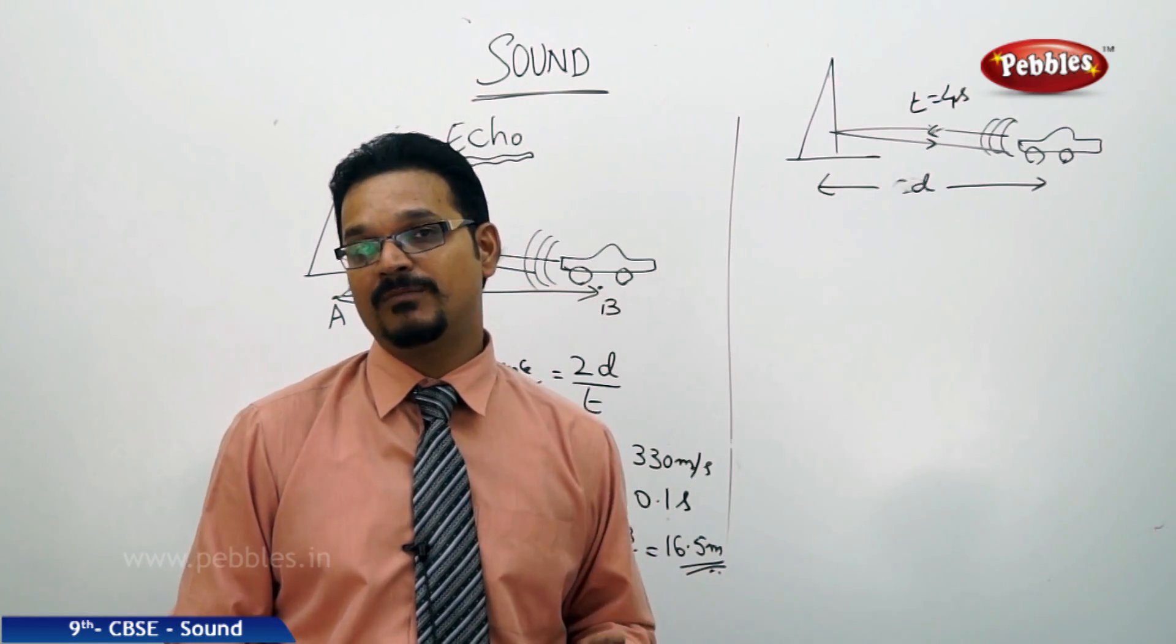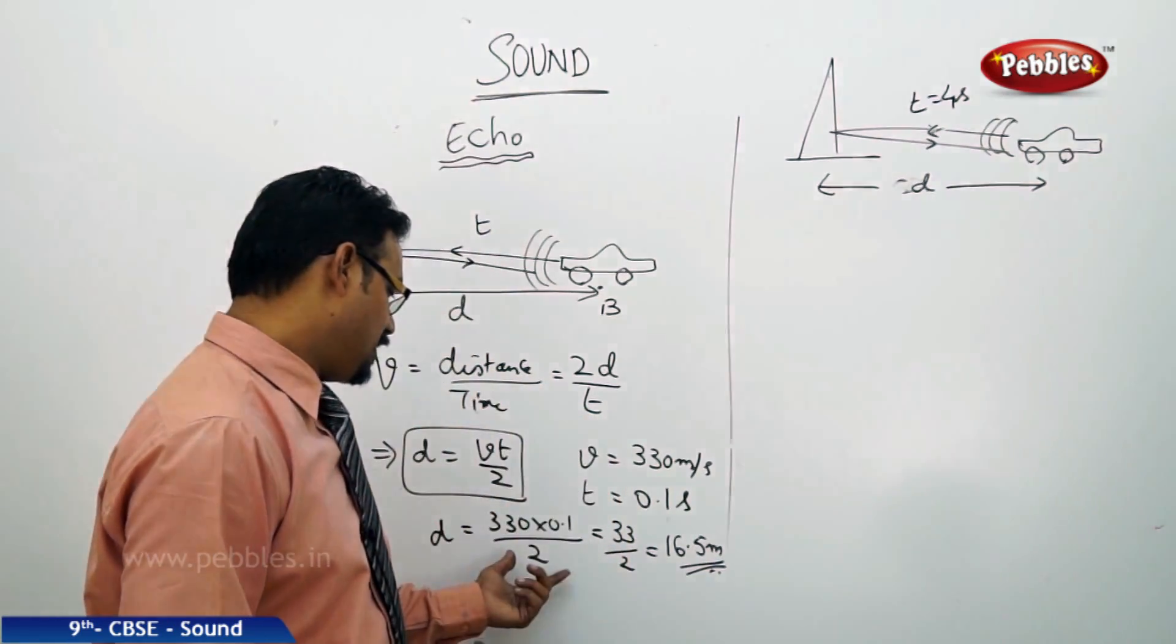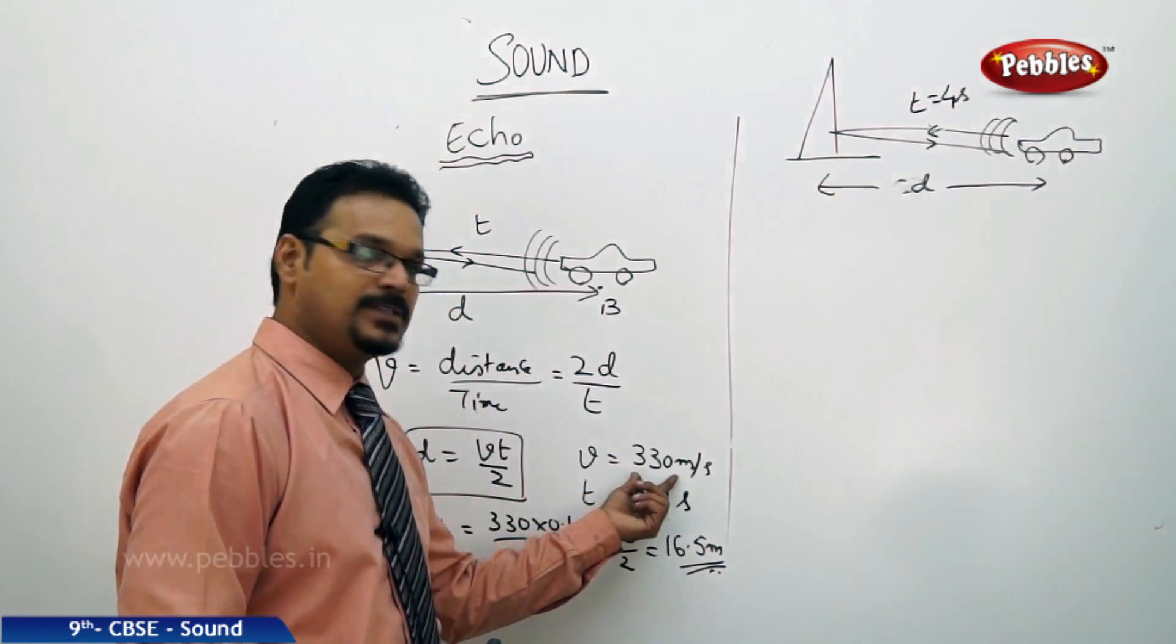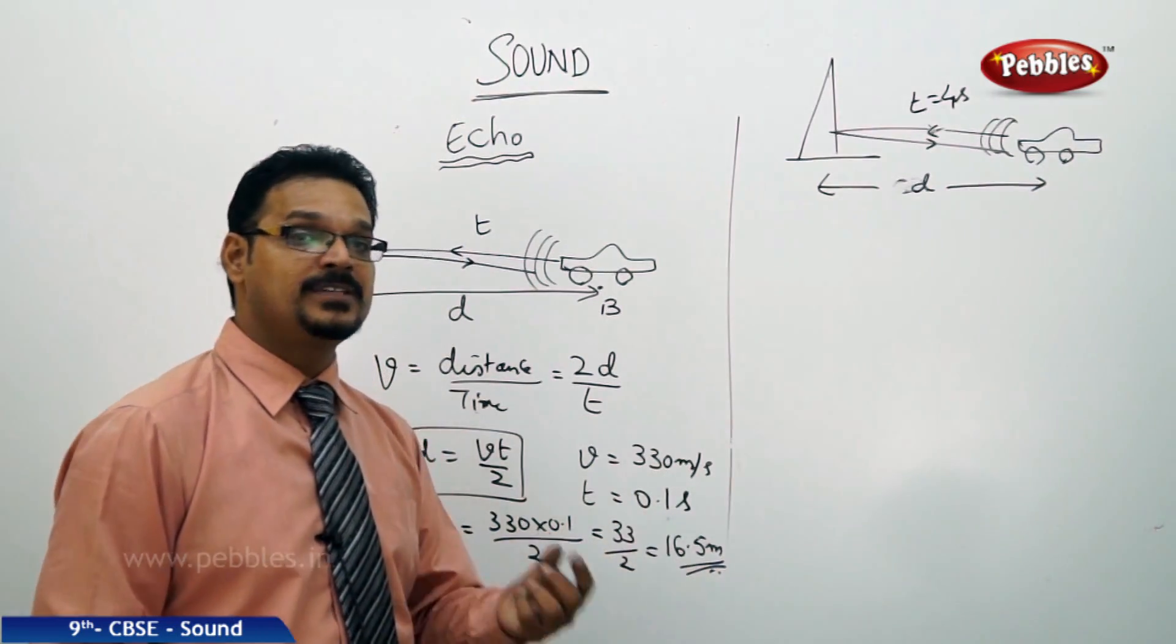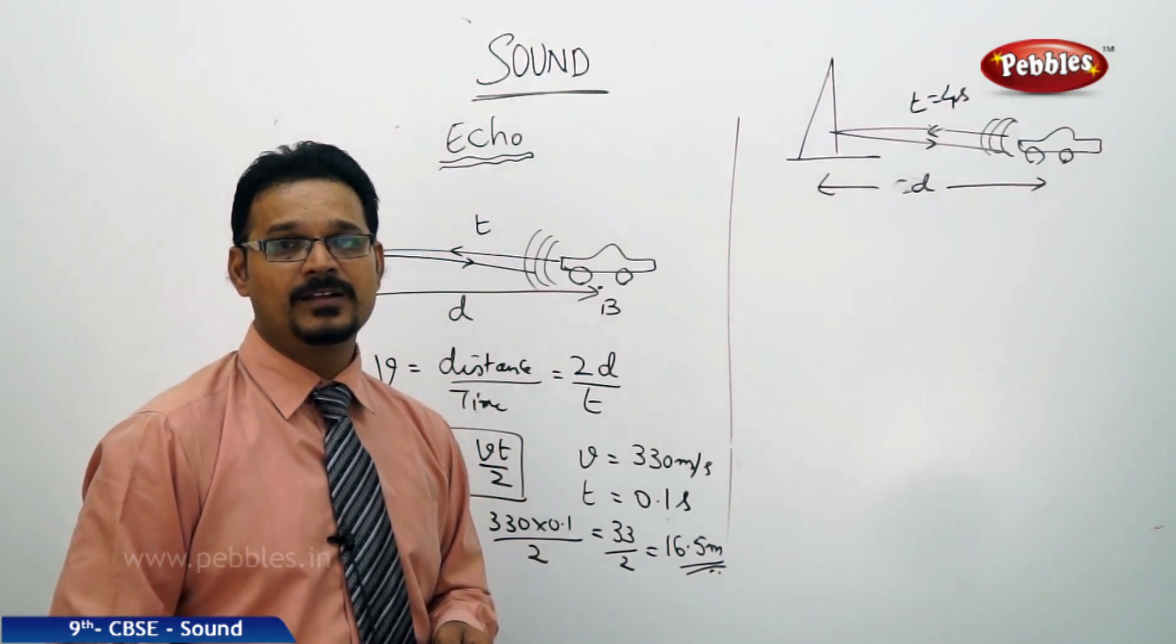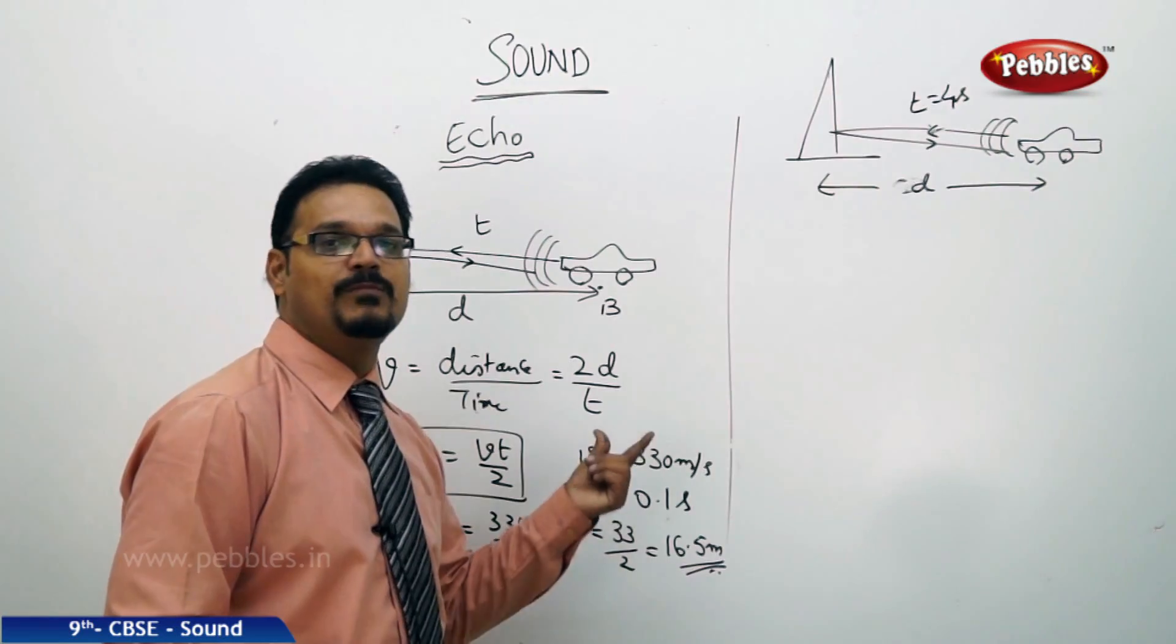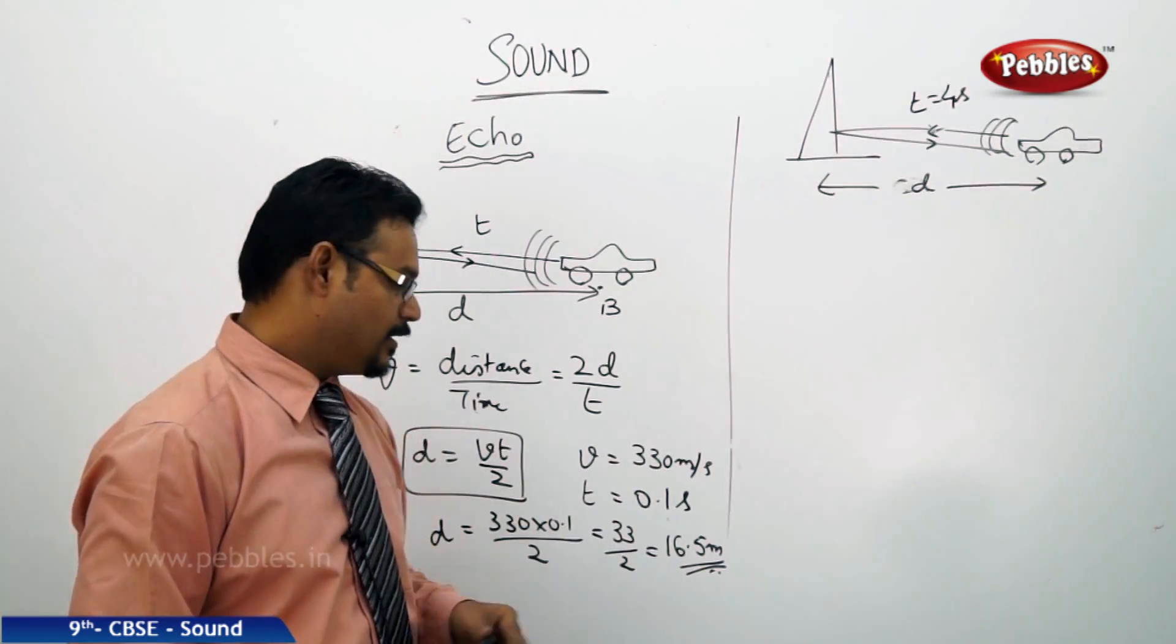In open areas and auditoriums the distance is very far, that's why when you shout you can hear the sound again and again. In this problem I've taken 330 meters per second, that's why I got 16.5. But sometimes textbooks show 17 meters also - that is correct when you take v as 340 meters per second.